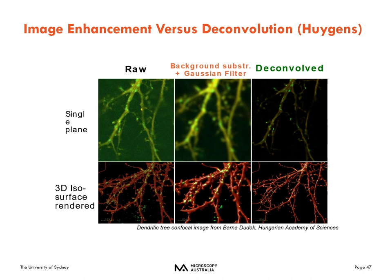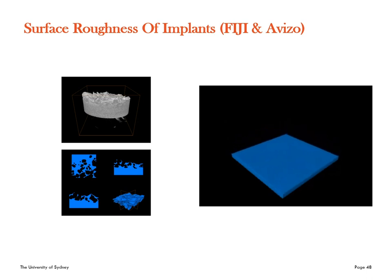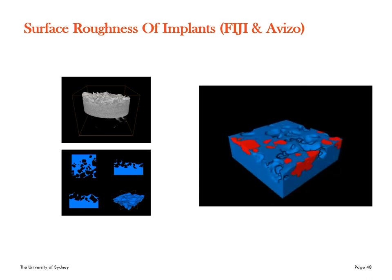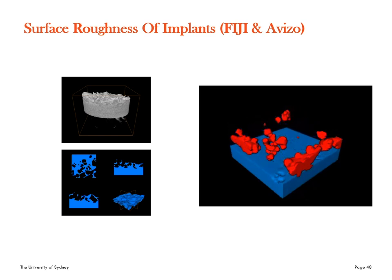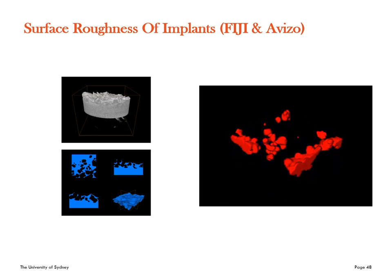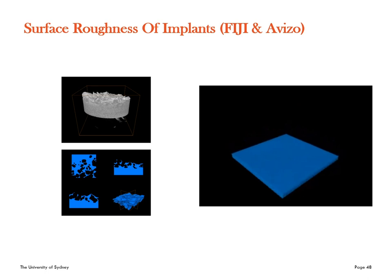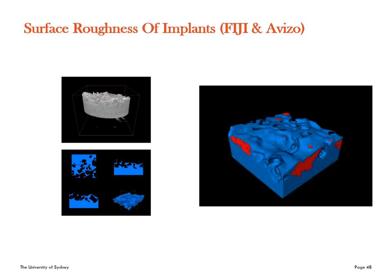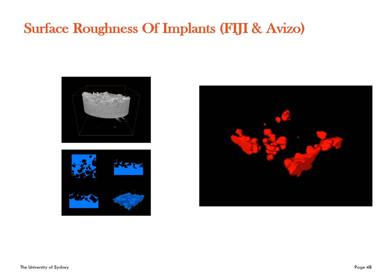Another real world example shows an XCT image of an implant, particularly looking at the surface where the manufacturer wanted to know how smooth or rough it was. By taking the raw image shown in gray and processing the data both in Avizo and then in Fiji, you can get the surface information and also the cross sections at the outside of the implant. This is a really good example where it makes more sense to use two software packages to get the information you require. There is always a way to get the meaningful information that you need, and we're always here to help.